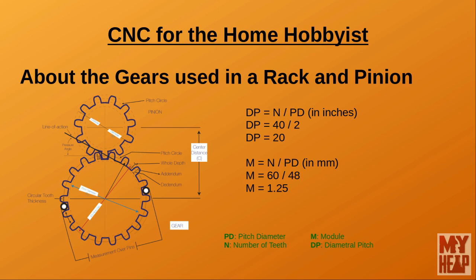In the imperial system, the base unit is the inch, so a gear's pitch diameter is measured in inches. Diametral pitch measures the number of teeth per inch of pitch diameter. For example, if we had a gear with a pitch diameter of 2 inches and 40 teeth, we calculate the diametral pitch by dividing the number of teeth by the pitch diameter: 40 divided by 2 equals 20. The gear would have a diametral pitch of 20.